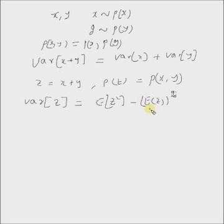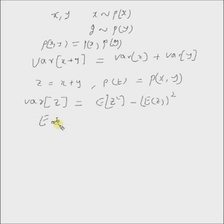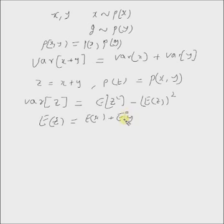In the previous video, probability basics — mean of sum of two independent random variables — we see that expectation of z is given by expectation of x plus expectation of y. So, the only unknown is the first term.